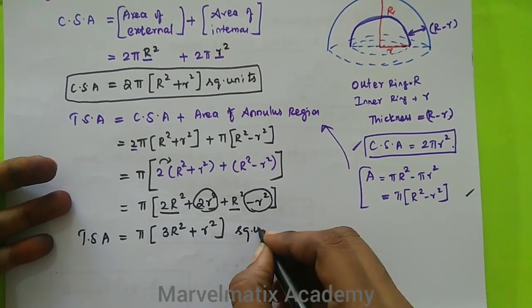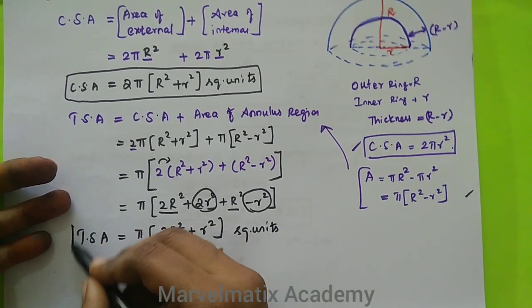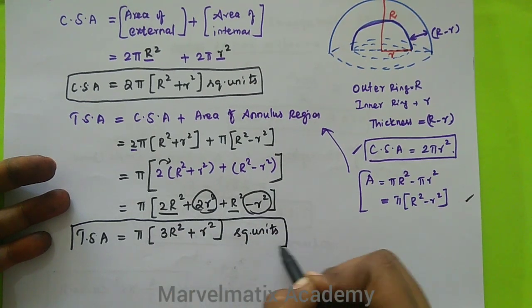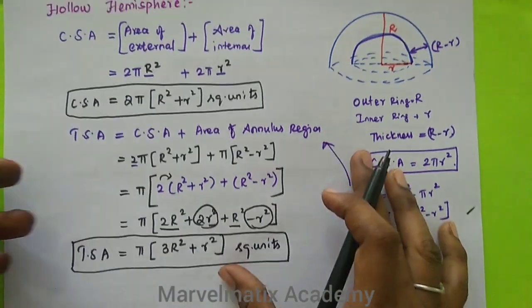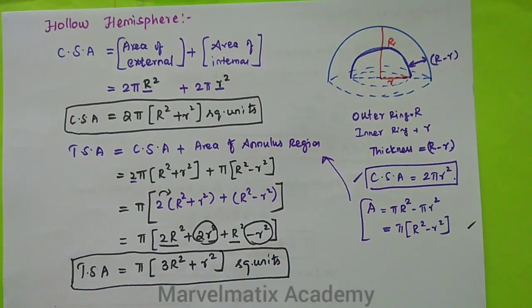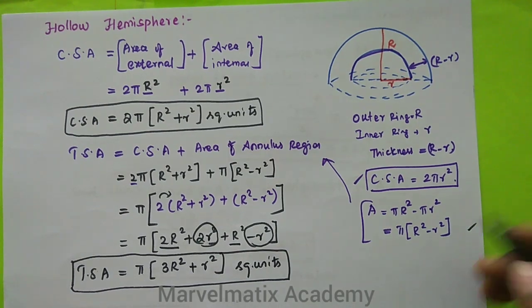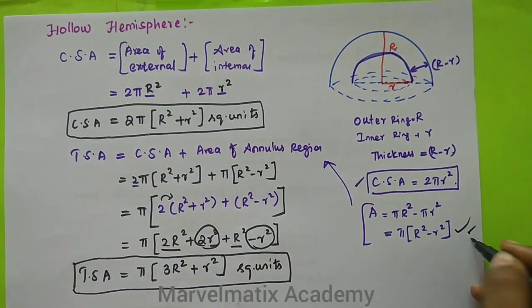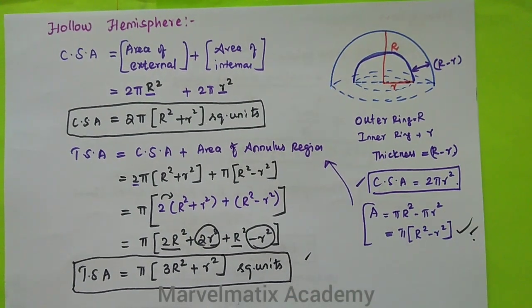So the TSA — Total Surface Area — of the hollow hemisphere formula is π(3R² + r²) square units. This is the thickness that we have to add, and this completes the TSA formula.